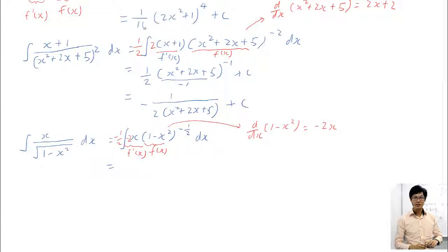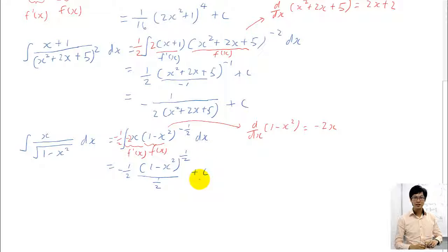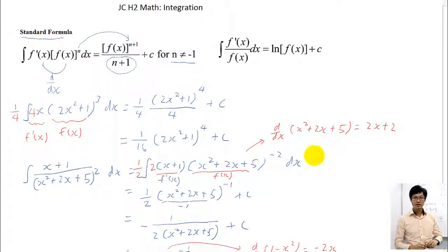Once you have f'(x) outside of f(x), you are good to go to apply the formula. So the answer will be negative half times bracket 1 minus x squared, minus half plus 1 gives me half, divided by the final power which is half, plus c. You can simplify further because the half and half cancel away — half divided by half is 1. So the answer will be negative 1 minus x squared to the power of half, plus c. This is how we apply the standard formula. In the next video, I will cover how to apply the second formula.